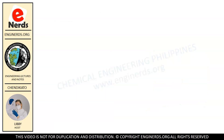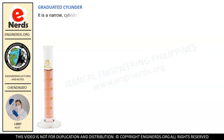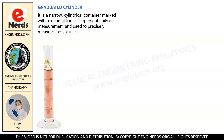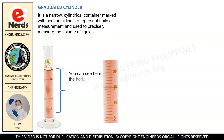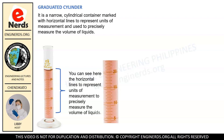Next we have the graduated cylinder. It is a narrow cylindrical container marked with horizontal lines to represent units of measurement, used to precisely measure the volume of liquids. This is what we use in the laboratory to get the precise volume of a liquid. As you can see in the photograph, the horizontal lines represent units of measurement to precisely measure the volume of liquids.